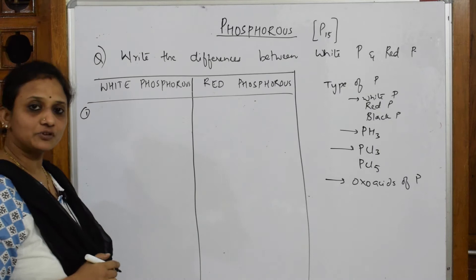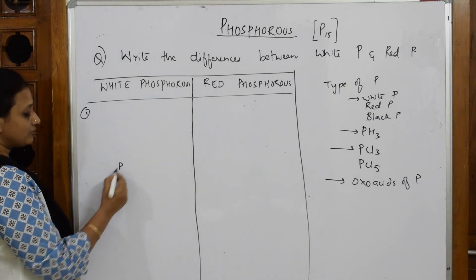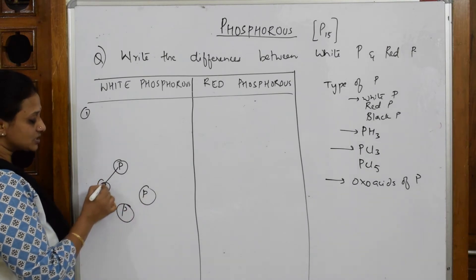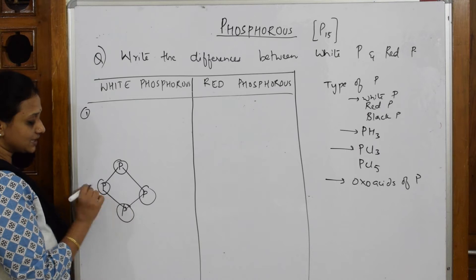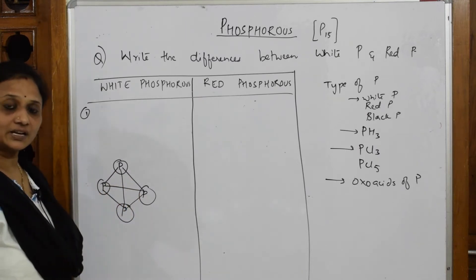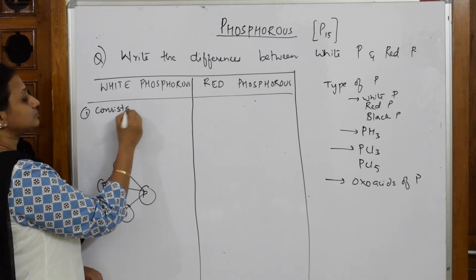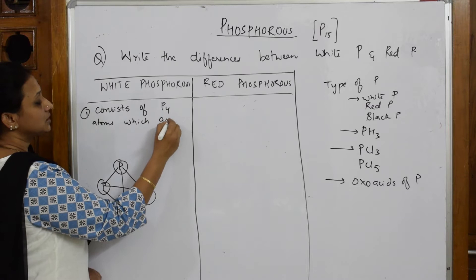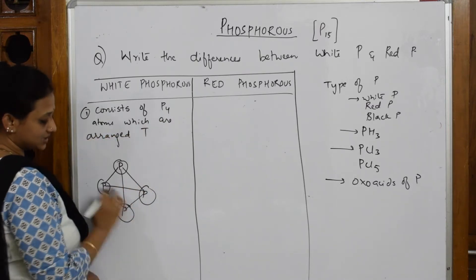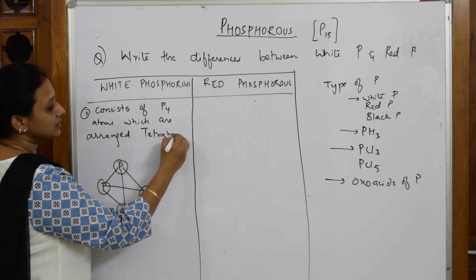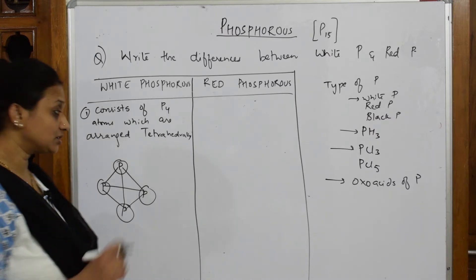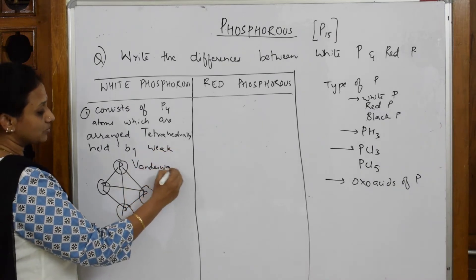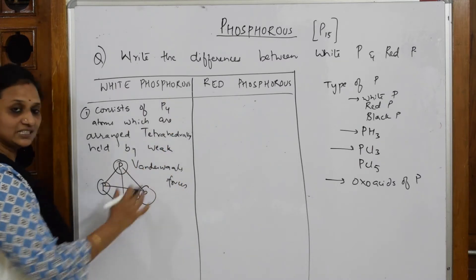White phosphorus consists of P4 atoms which are arranged tetrahedrally. One phosphorus atom is linked to another, and all four are tetrahedrally arranged. The forces of attraction holding them together are weak van der Waals forces. So everything in white phosphorus is P4 linked together by van der Waals forces.